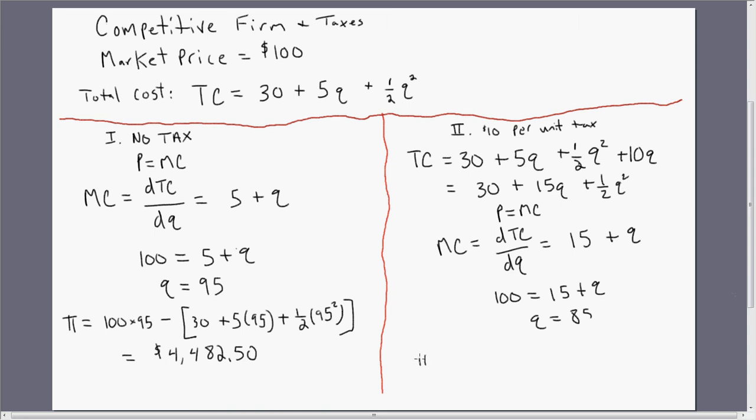The competitive firm's profit now in the face of taxes is going to be the price times the quantity. So we do that to get total revenue. And then once again, we're going to subtract out total cost.